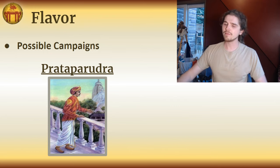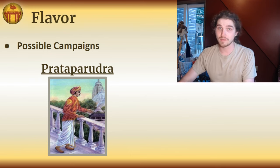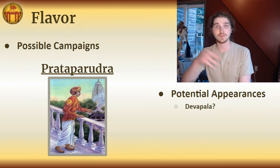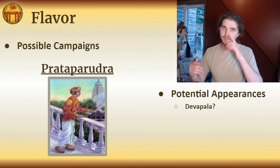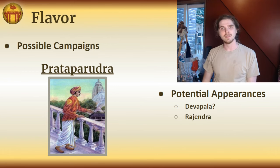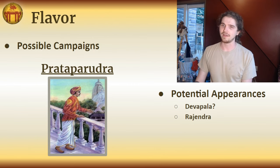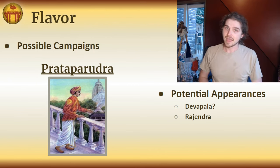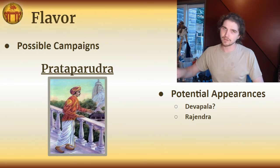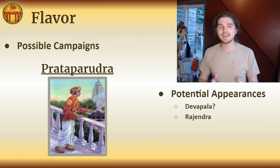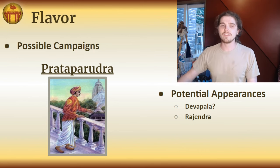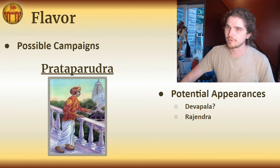Let's mention where the Telugu could actually appear in existing campaigns. There aren't a ton of options, but the Devapala campaign might have a couple places where you could slot them in instead of the Dravidians. Much more importantly, the Rajendra Chola campaign has a number of AI states that are exactly Telugu in nature, so you could easily slot this civilization in or use it for a bit of variety against the sea of Dravidians.